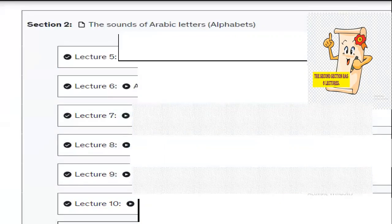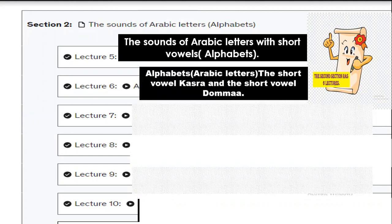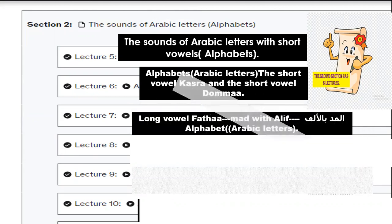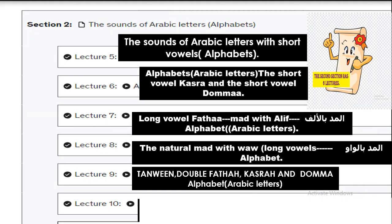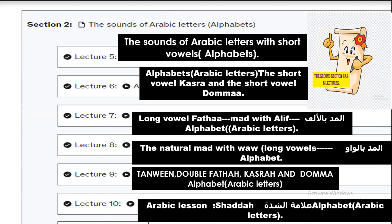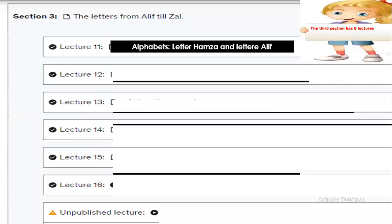In the second section you will recognize the sounds of Arabic letters. The first lecture covers sounds of Arabic letters with short vowels. Number two covers the short vowel kasra and the short vowel damma. Number three covers the long vowel fatha madd with aleph and madd double aleph. Number four covers natural madd with wow long vowel and madd double wow. Number five covers tanwin: double fatha, double kasra, and double damma. Number six covers the shadda sign.